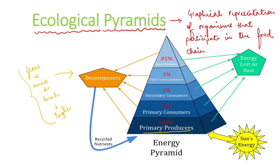Since the graph is in the form of a pyramid, we call it a pyramid. So what is your primary producer? Here it will be plants, then mice, then snake, then eagle or vultures. So this way, when we graphically represent the organisms that participate in the food chain, we call that an ecological pyramid.